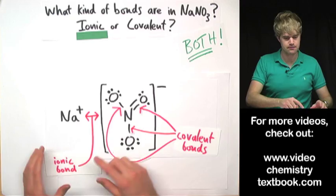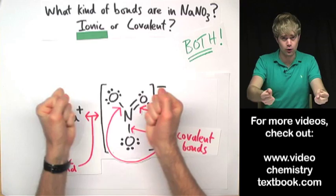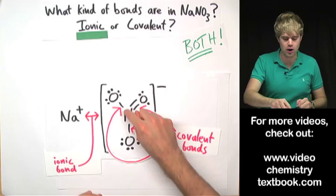So what kinds of bonds are in NaNO3? Ionic bonds holding the two ions together but then covalent bonds holding together all of the atoms that make up this polyatomic ion.